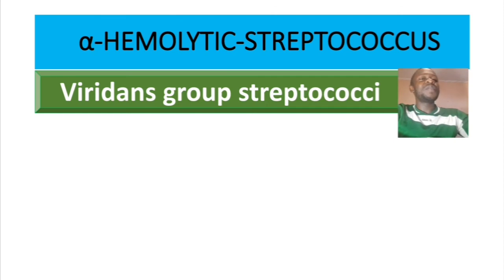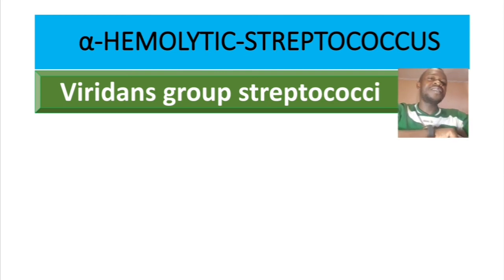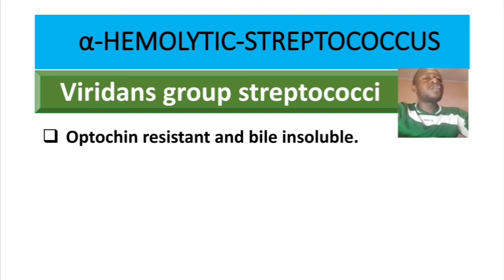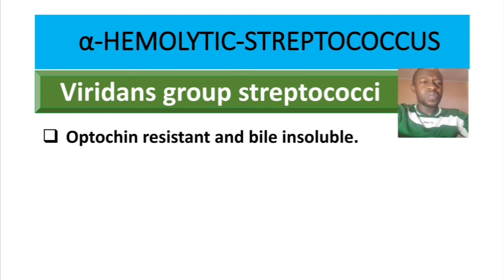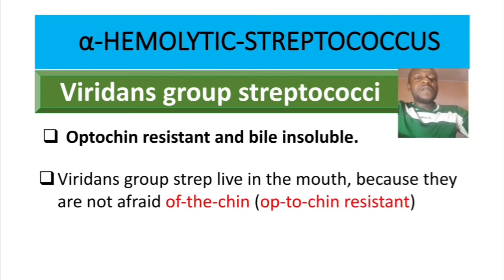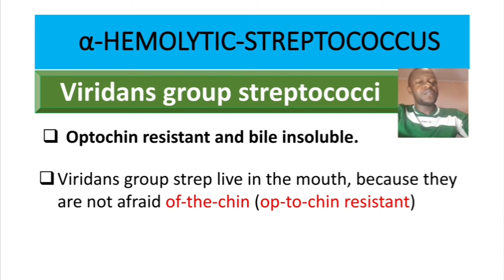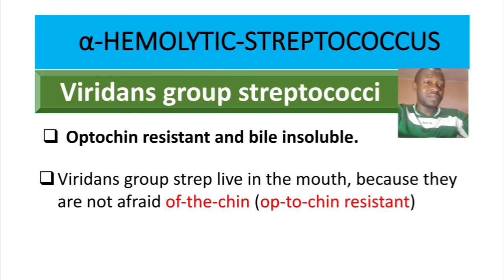To differentiate viridans streptococci from Streptococcus pneumoniae: viridans streptococci are optochin-resistant and bile-insoluble, meaning they are not affected by optochin and they can grow in bile. A memory aid: viridans group streptococci live in the mouth because they are not afraid of optochin — they are optochin-resistant.